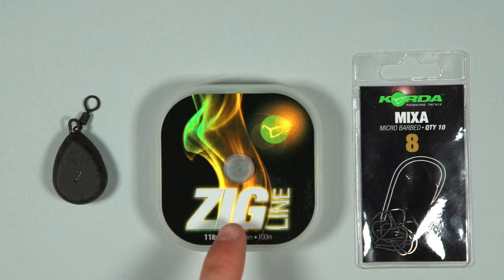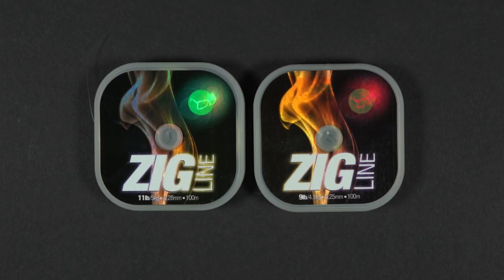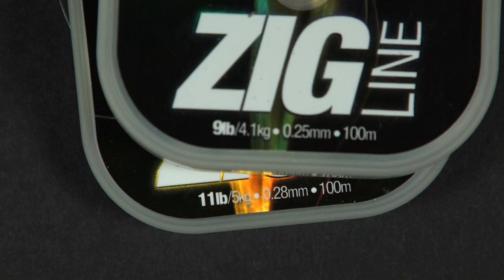A spool of zig line. This comes in a few different breaking strains so pick one that suits the water you're fishing.